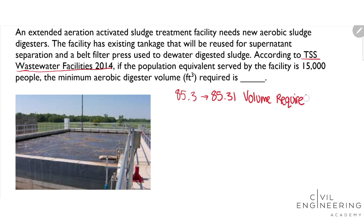If we look there, we'll see that the aerated activated sludge requires 3.0 cubic feet per population equivalent.